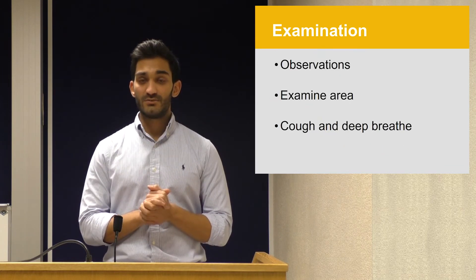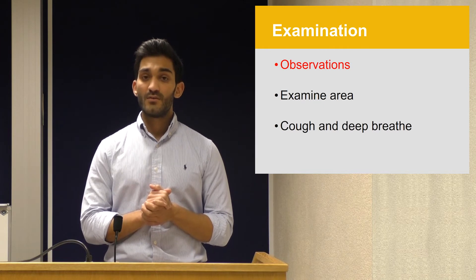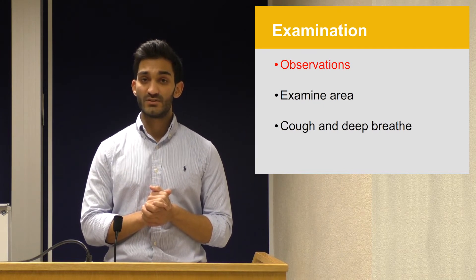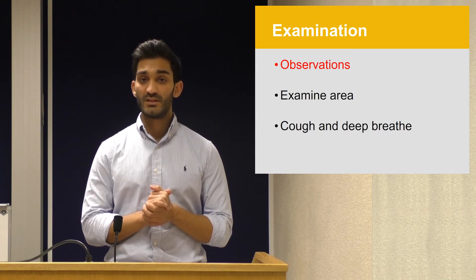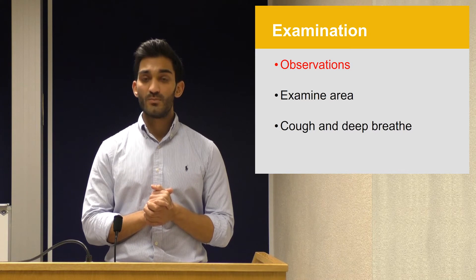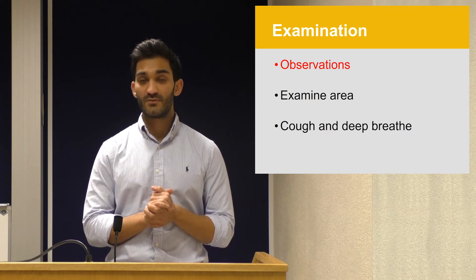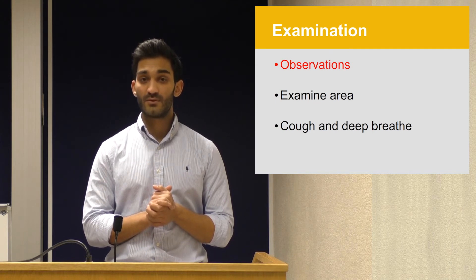The first part of the examination is looking at the patient's observations, which should be immediately available. One difficulty is that there is significant overlap between systemic inflammatory response syndrome (SIRS) criteria and the signs and symptoms of pain. One important distinguishing sign is the blood pressure. If the patient were suffering with SIRS, perhaps with sepsis, they might have a low blood pressure.